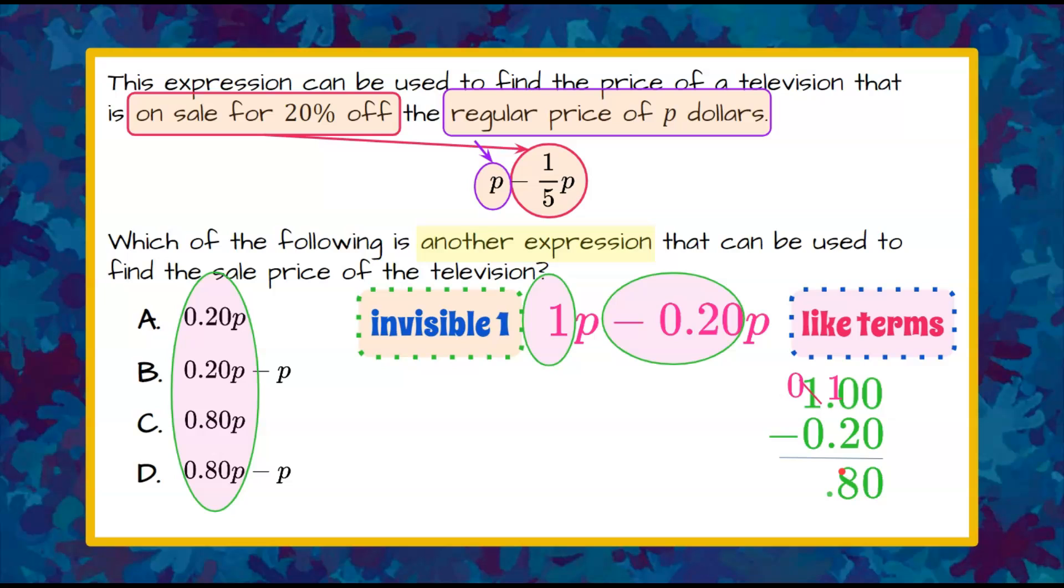bringing down our decimal point, and 0 subtract 0 is 0. So we know that when we subtract, we're going to get a coefficient of 0.80 or 80 hundredths times P.